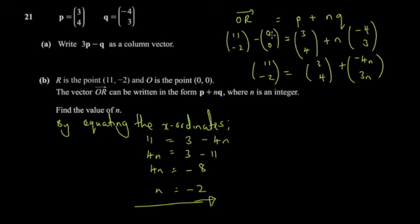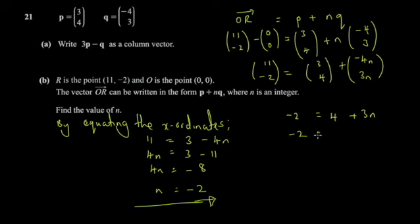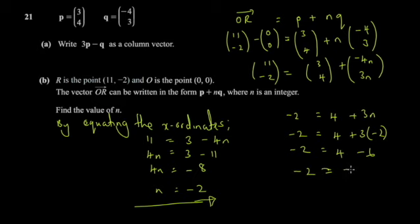Dividing both sides by 4 gives n = -2. To verify, use the y-ordinate: -2 = 4 + 3(-2) = 4 - 6 = -2. That checks out, so we're on the right track. The verification isn't part of the working — it's just a check.